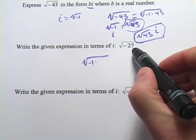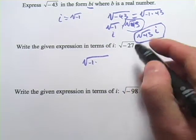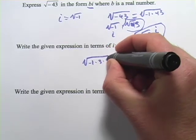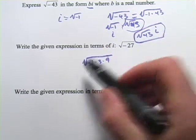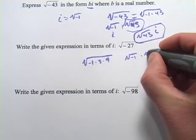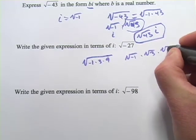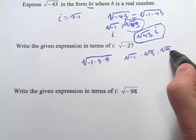While I'm at it, I can do some more factoring here. 27 is 3 times 9. I'm just going to go ahead and do that in one step. This becomes the square root of negative 1 times the square root of 3 times the square root of 9. The square root of 9 is 3. The square root of negative 1 is i.